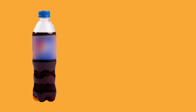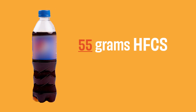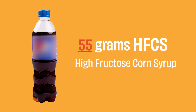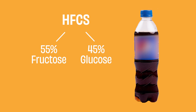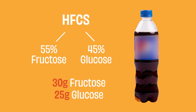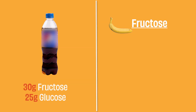A 500ml bottle of cola has about 55 grams of HFCS, or high fructose corn syrup. HFCS is almost like sugar — it's 55% fructose and the rest is glucose. So that's about 30 grams of fructose and 25 grams of glucose in a single bottle.